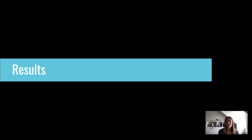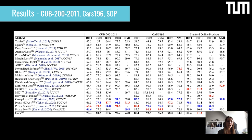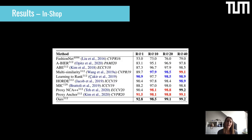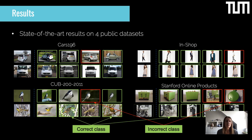Our results show that our method — the last line in the table — achieves best recall-at-1 and NMI scores on the CUB, CARS, and Stanford Online Products datasets, where recall-at-1 evaluates ranking performance and NMI evaluates clustering performance. On the InShop dataset we also achieve best results in all metrics. Qualitative results show examples from CARS (car images) and InShop (online clothing shop images).